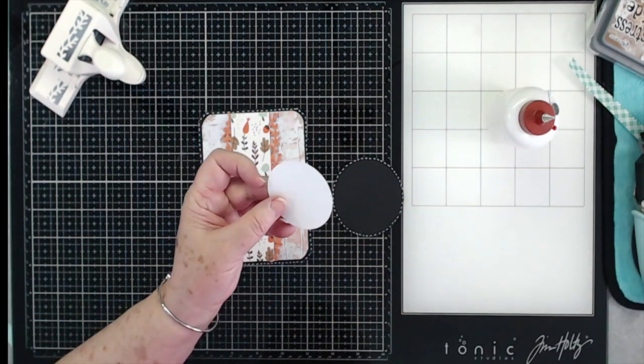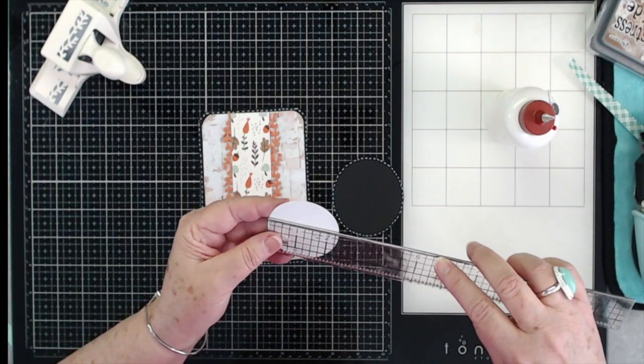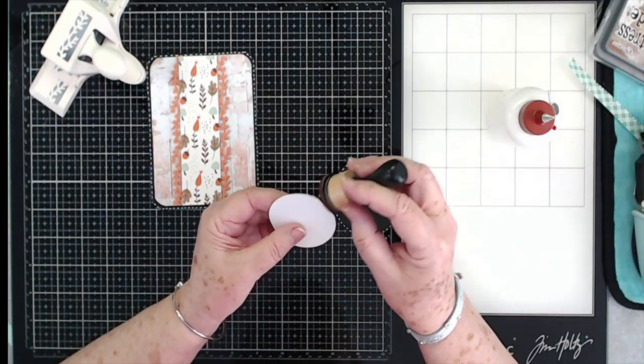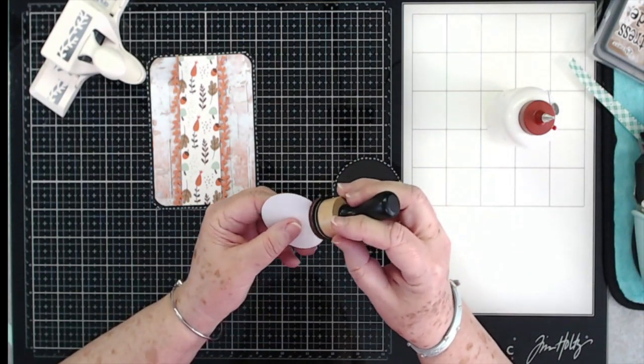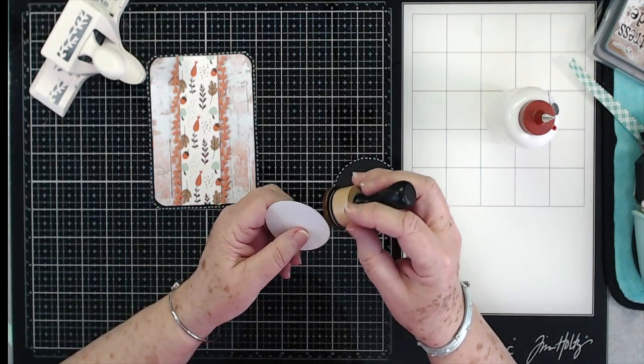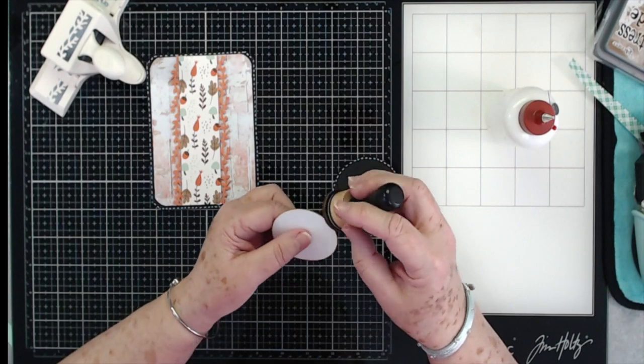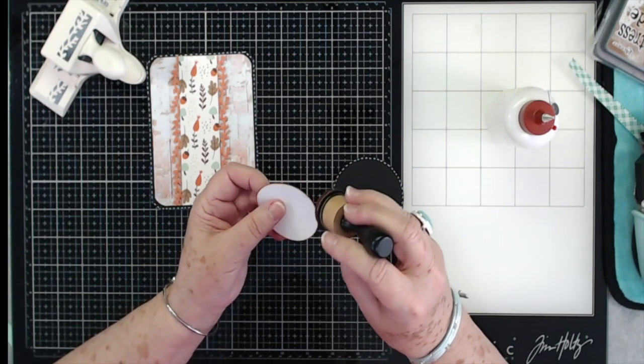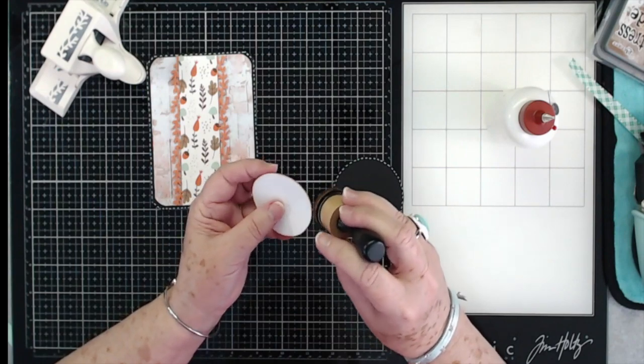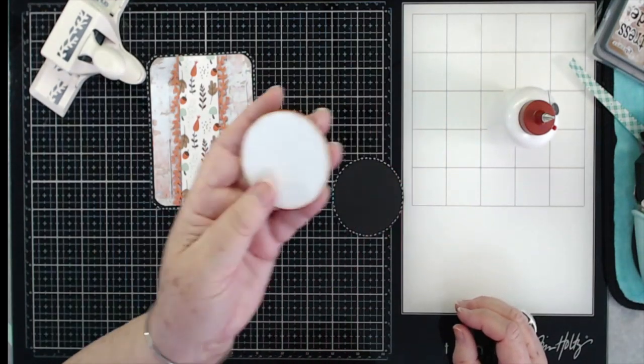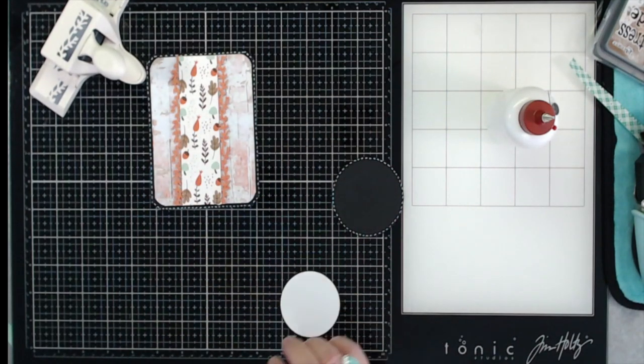So there are the stitch marks. And then I have a white circle here, and this is two and three eighths. I'm going to do a little bit of inking on this. I'm going to use my Vintage Photo. I want this to look kind of dim, kind of dark around the edges and a little bit up on the piece here. I want to kind of blend it out. There we go, that looks good enough.